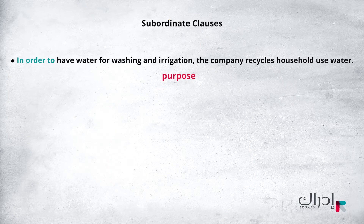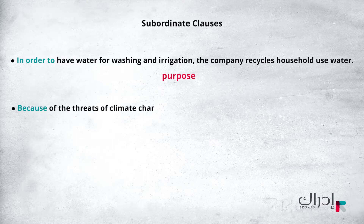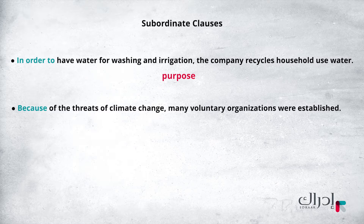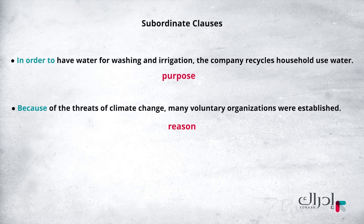Now let's move on to another example. 'Because of the threats of climate change, many voluntary organizations were established.' What is the use of the subordinate clause in this sentence? The word 'because' should give you a hint. Here, we want to emphasize the reason. What is the reason for the establishment of the voluntary organizations? The threats of climate change. There are other popular phrases that can be used instead of 'because', like 'because of', 'due to', and 'since'.